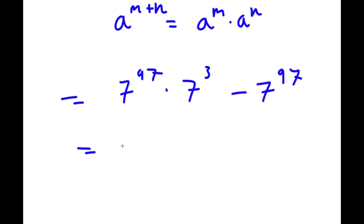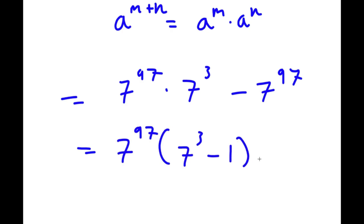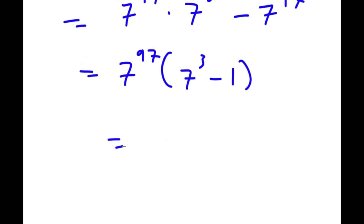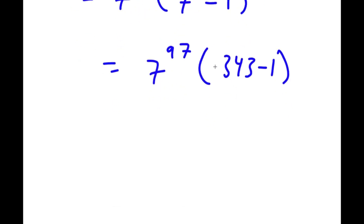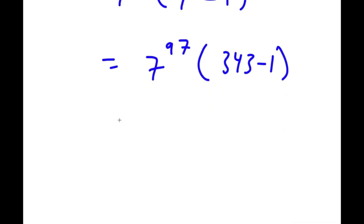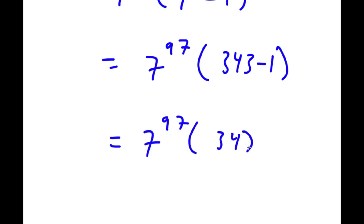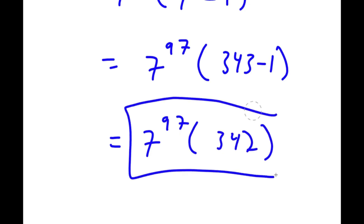Factoring out 7 to the power of 97, I get 7 to the power of 97 times 7 to the power of 3 minus 1. Since 7 to the power of 3 equals 343, I have 7 to the power of 97 times 343 minus 1, which is 342. So the answer is 7 to the power of 97 times 342.